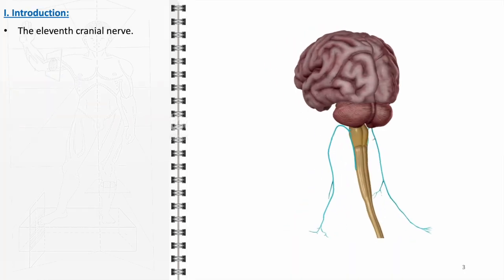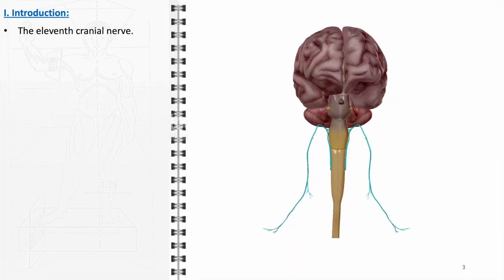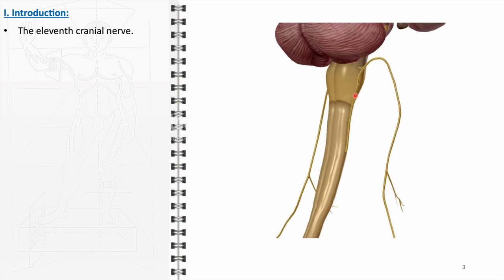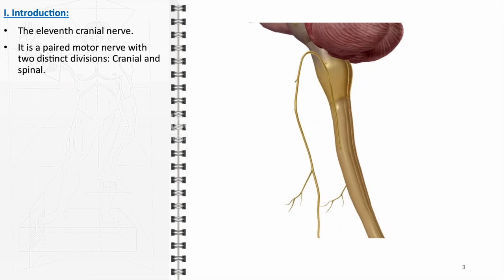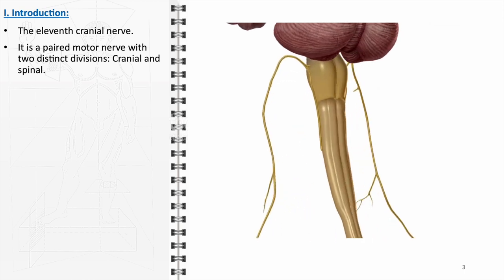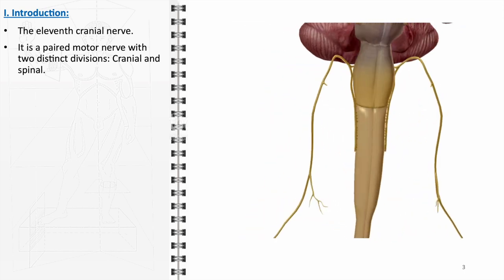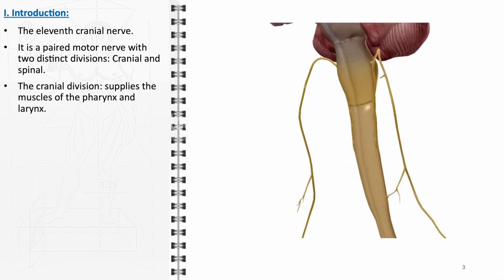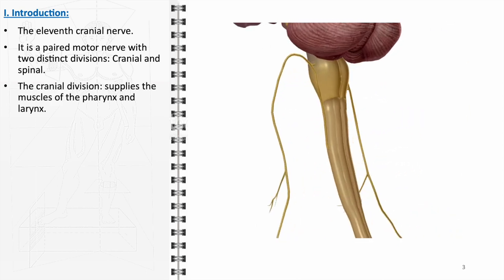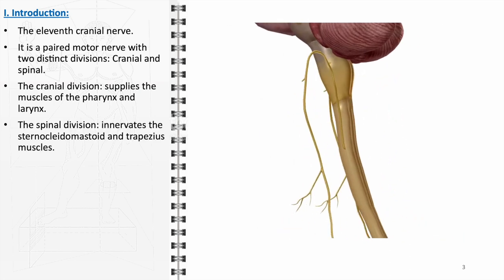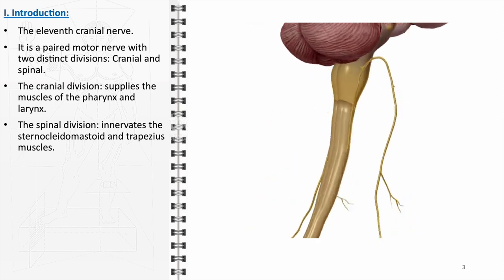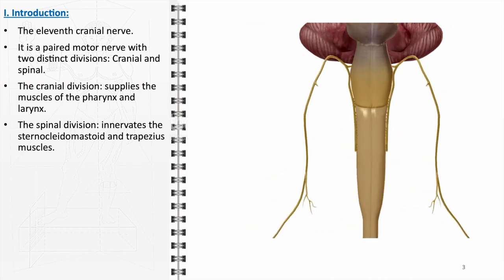Commonly known as the 11th cranial nerve, it is a vital component of the human nervous system. It is a paired motor nerve, distinguished by its two distinct divisions, the cranial and spinal divisions, each with specific functions and innervation patterns. The cranial division primarily supplies the muscles of the pharynx and larynx, while the spinal division is responsible for the motor innervation of the sternocleidomastoid and trapezius muscles. The accessory nerve's dual functionality underscores its importance in various motor activities.